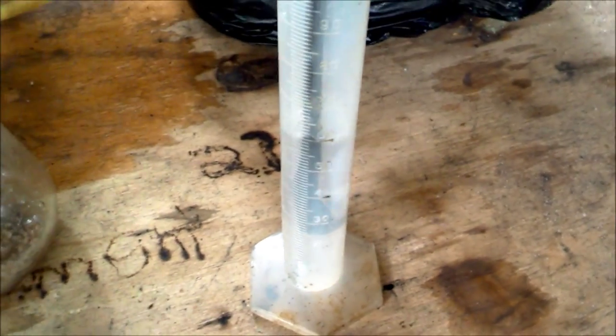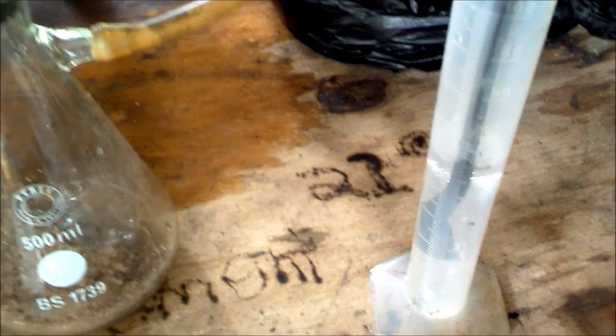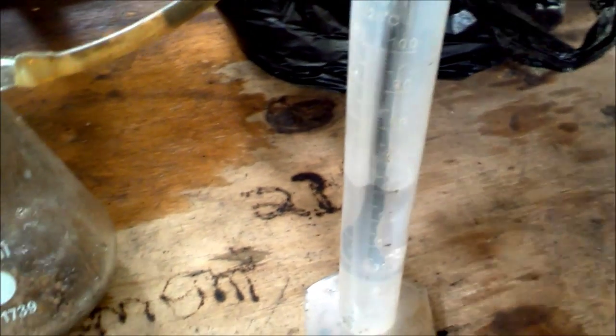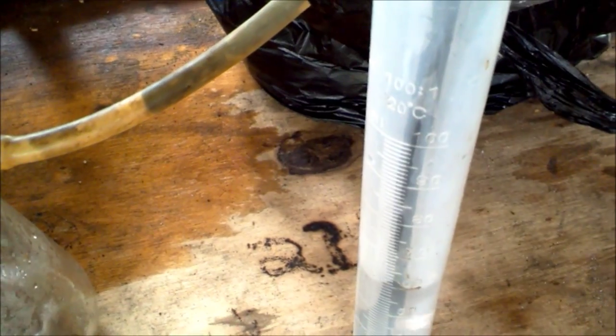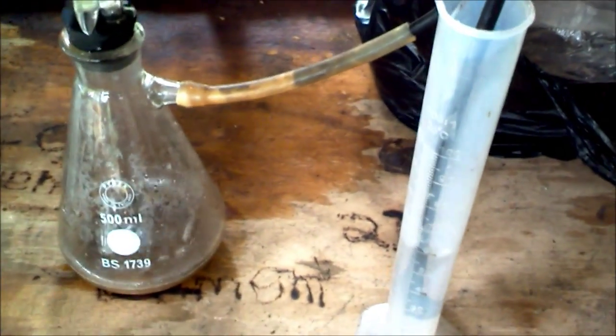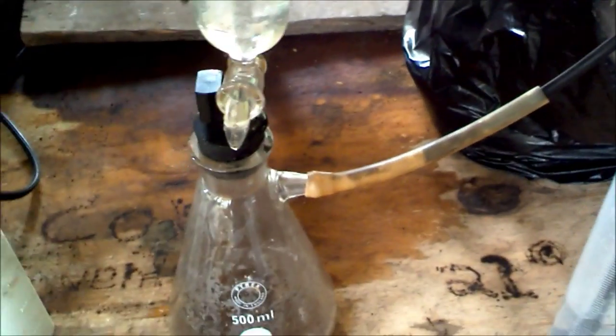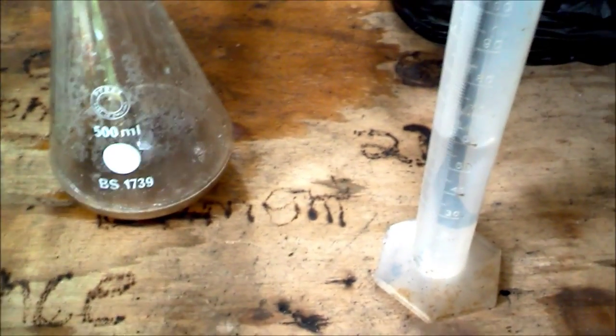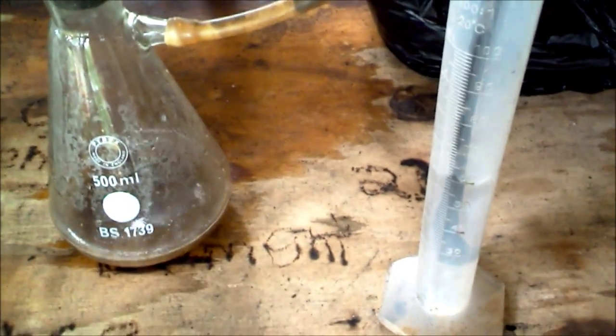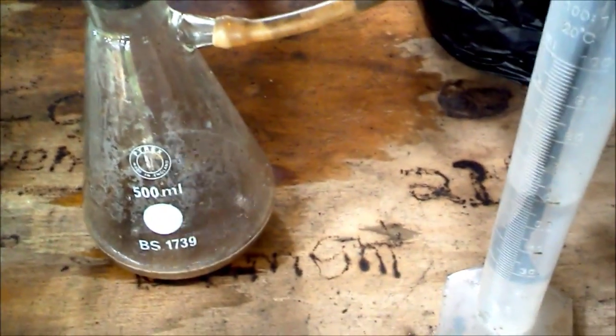As you can see, ammonia has begun to generate. Be sure to do this outdoors because ammonia can be poisonous in high concentration. The generation is getting a bit slower. Heating the flask will also cause more ammonia to form.